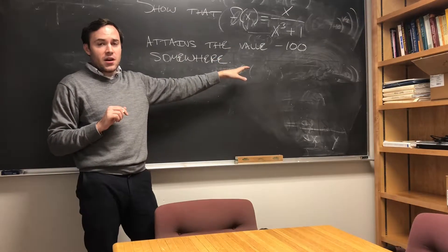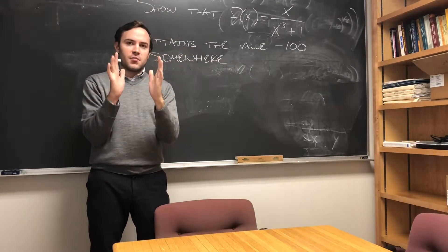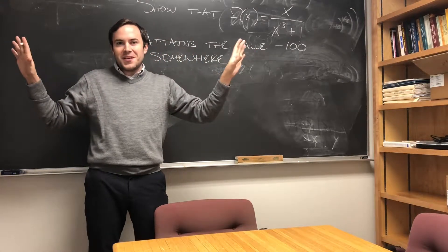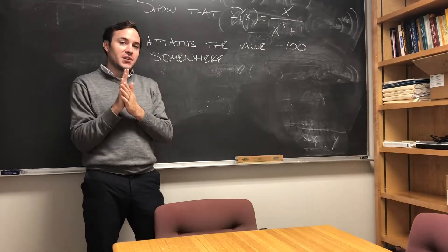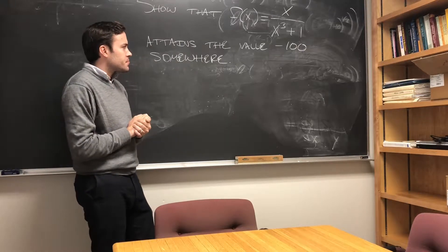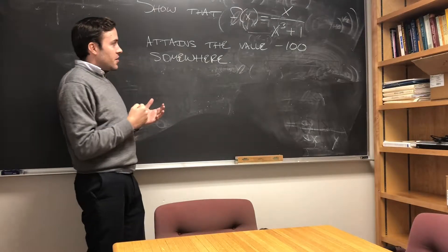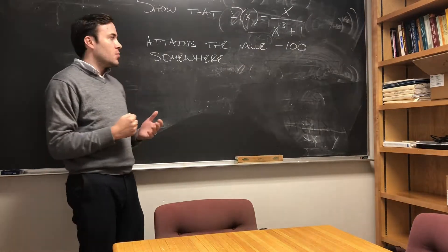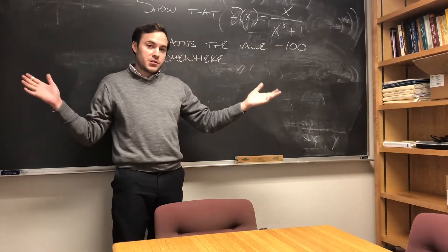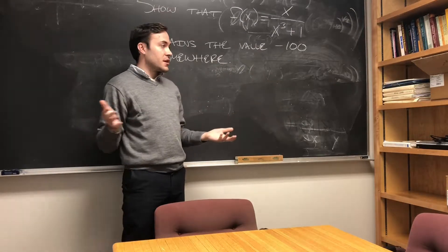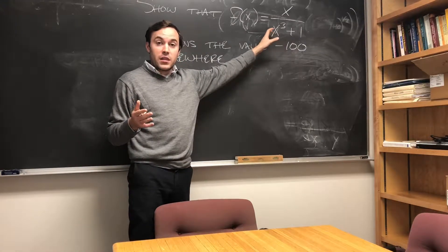So that means that this value of negative 100, if it is attained, has to be attained somewhere in the middle ground — somewhere between plus and minus infinity. We've got to look for a specific x value where this might happen. So think about another way that this function can become quite large.